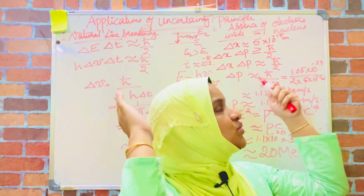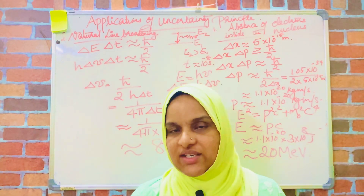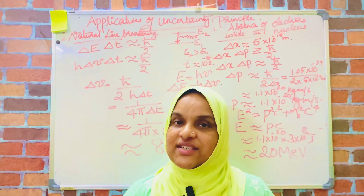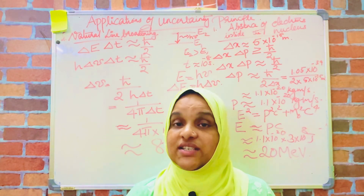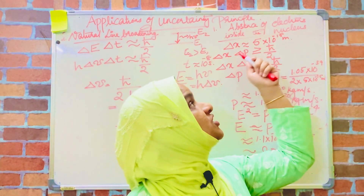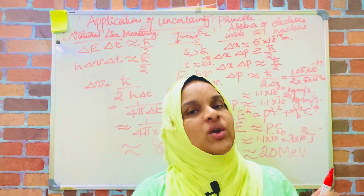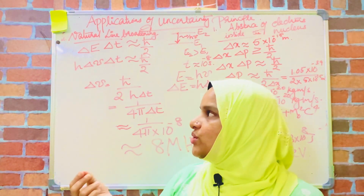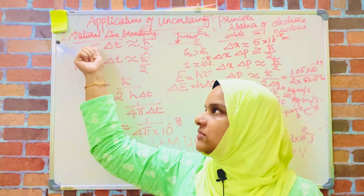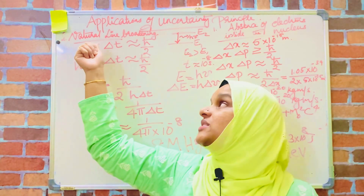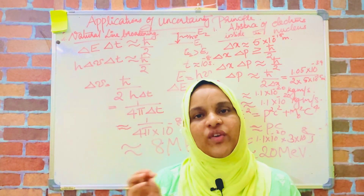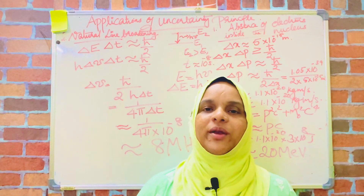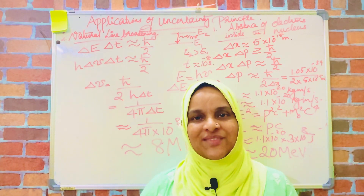Thus, these two are the applications of the uncertainty principle. The first is the absence of electrons inside a nucleus, explained using the uncertainty principle in terms of position and momentum. The second is natural line broadening, explained using the uncertainty principle in terms of energy and time. Thank you.